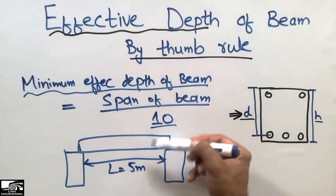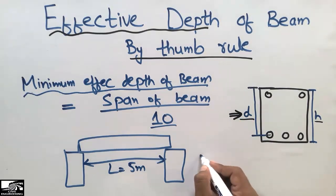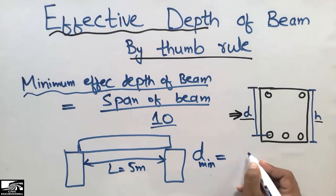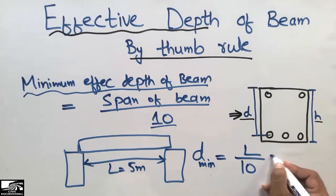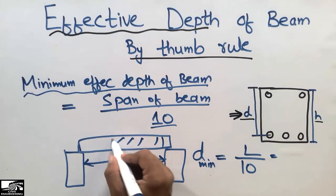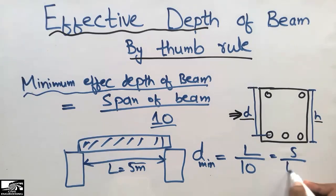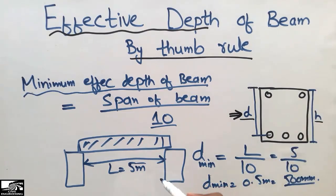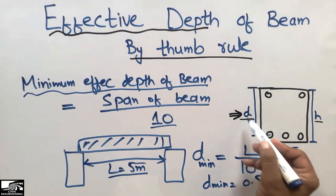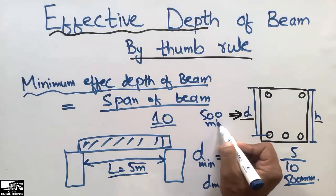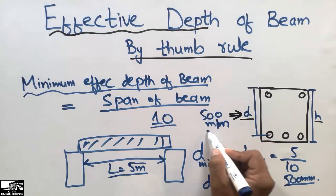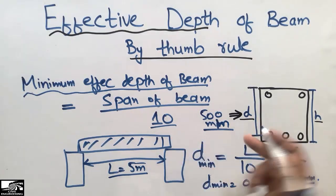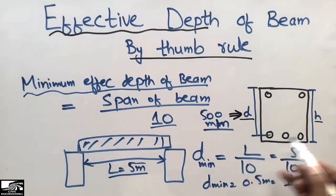Let's consider the span L is 5 meters. The thumb rule says the minimum effective depth D should be at least the span divided by 10. So: 5 meters divided by 10 equals 0.5 meters, or 500 millimeters. This means that where the beam length is 5 meters, the minimum effective depth should be at least 500 millimeters — it should not be less than 500 millimeters, but can be more.